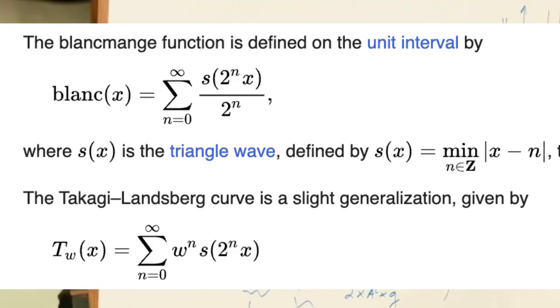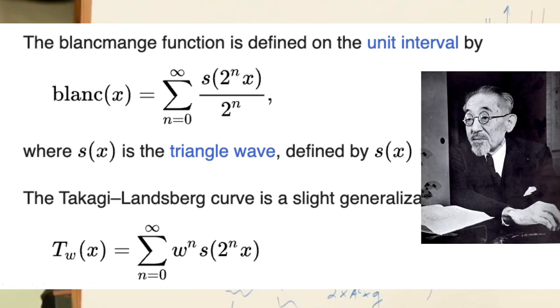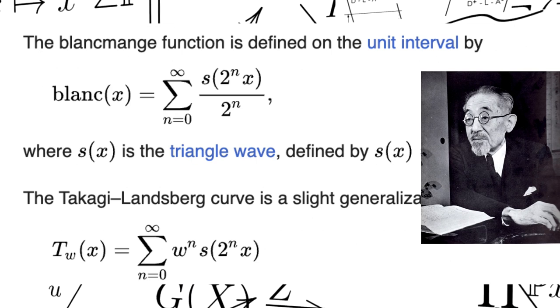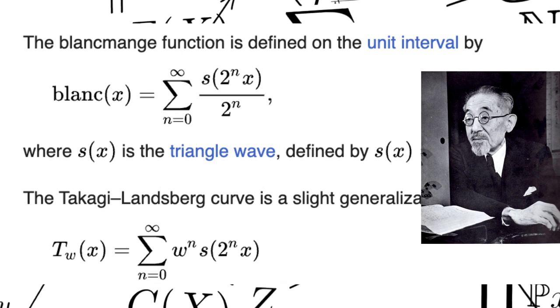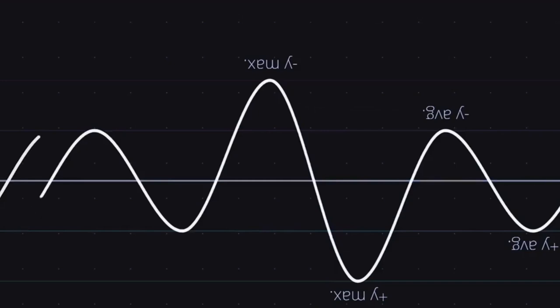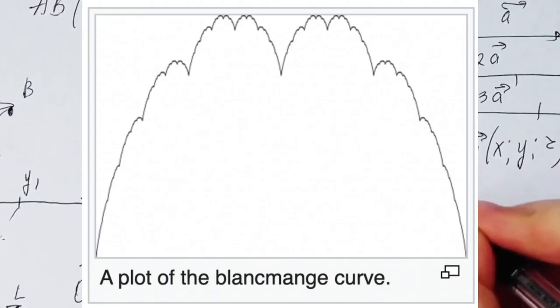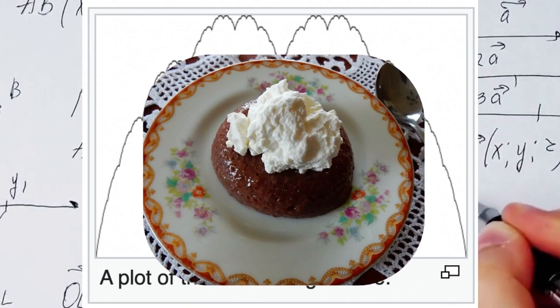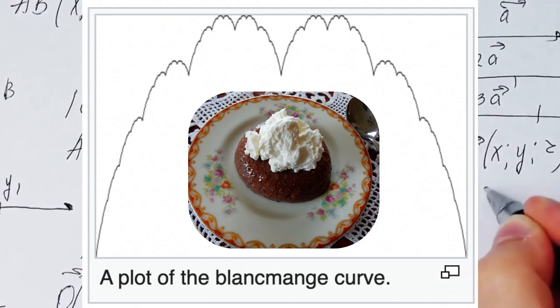The Takagi function is named after Teiji Takagi, a Japanese algebraic number theory mathematician and the founder of class field theory. It refers to a continuous but non-differentiable fractal function. This function curve is called a Takagi curve or the Blancmange curve because its image looks like a blancmange, a French pudding dessert.